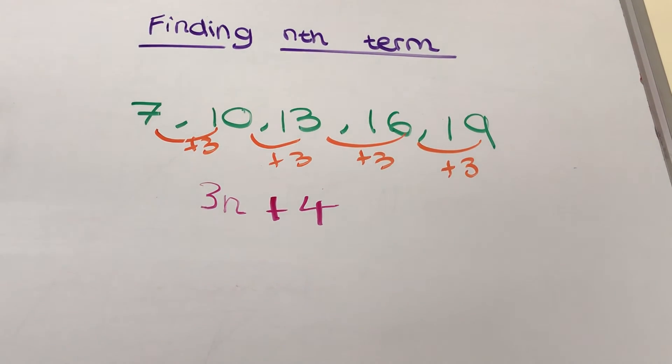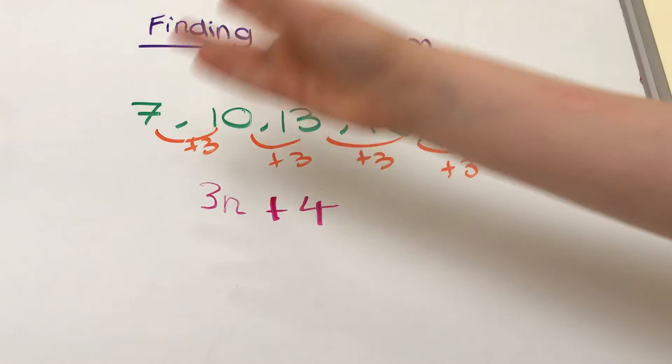I'll go over them again. So you have your sequence and you have to work out the gap between them. So I figured out that in between every gap we're adding 3, because 7 add 3 is 10, 10 add 3 is 13, and so on.